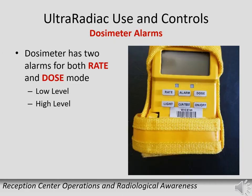The dosimeter uses two alarms for each mode. The rate alarm keeps you informed of the radiation field around you as you work; you always want to be in the lowest exposure area possible. The dose alarms are used for overall exposure monitoring to ensure you do not exceed the state turn-back value and to inform you when you reach the administrative or call-in value.